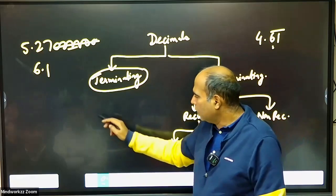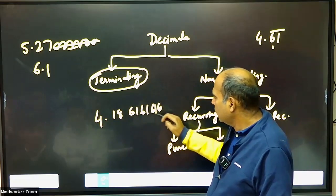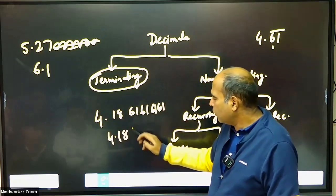Impure recurring decimal is something like 4.18, then 6.1, 6.1, 6.1, 6.1 repeating. So it is written as 4.18, 6.1 bar.